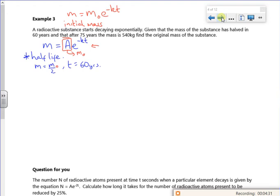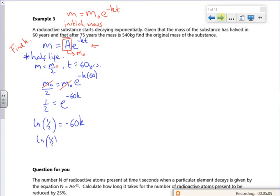So my mass is M₀/2. That equals M₀ my original mass e^(-k×60). What's nice about these half-life questions is you don't need to know what the original mass is to work out what K is. I have to find my K value first. My M₀'s cancelled. So ln(1/2) = -60k. So ln(1/2) divided by -60 gives me a K value.